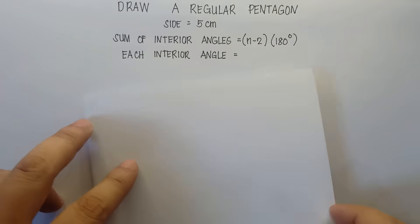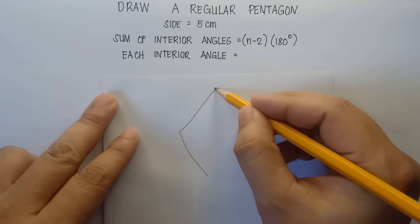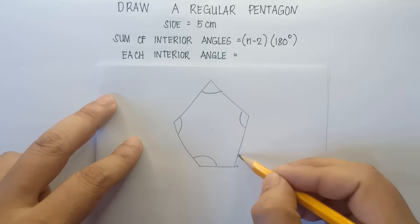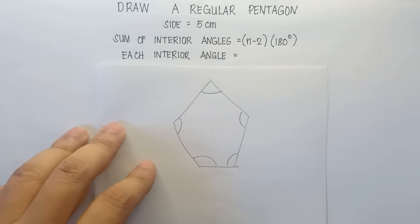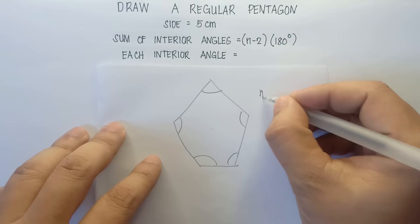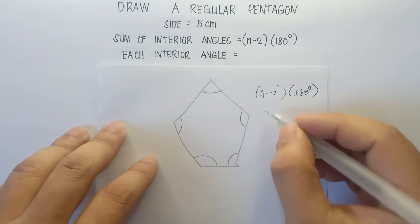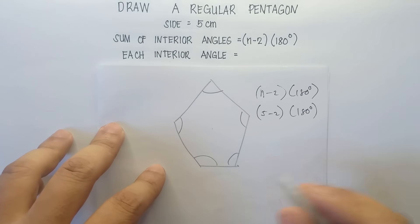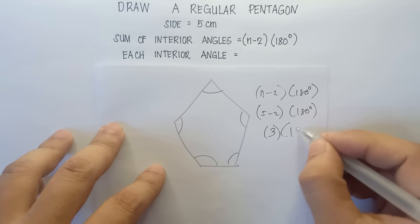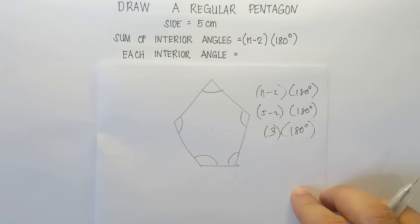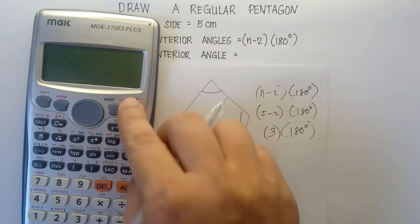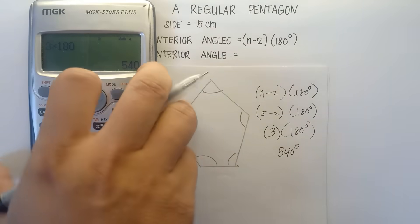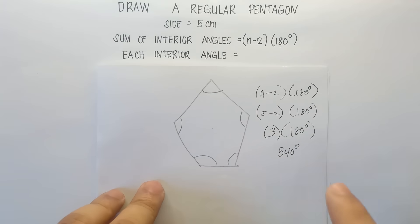Now if we have a pentagon — not a regular pentagon, since the sides are not equal — we can find the sum of its interior angles using the formula: n minus 2, times 180 degrees. Here n represents the number of sides, so we have 5. That gives us 5 minus 2 times 180 degrees, which is 3 times 180 degrees. Using a calculator, 3 times 180 equals 540. Therefore, for any pentagon, the sum of the interior angles must be 540 degrees.